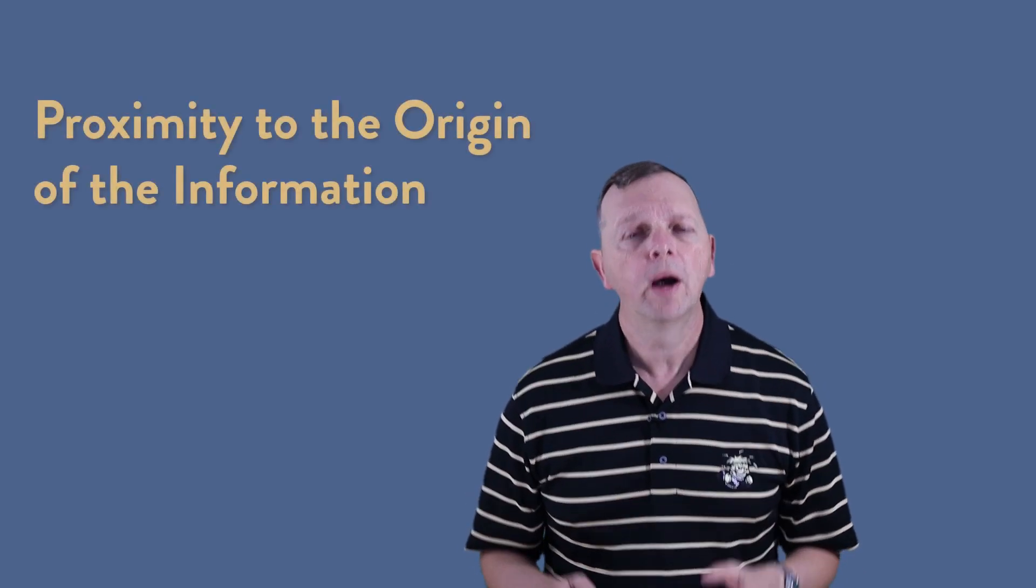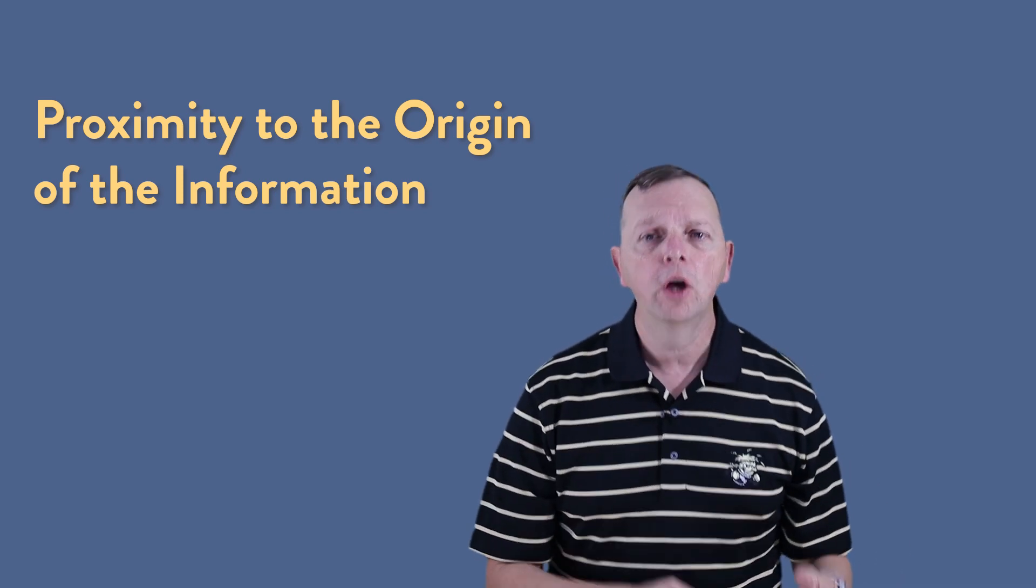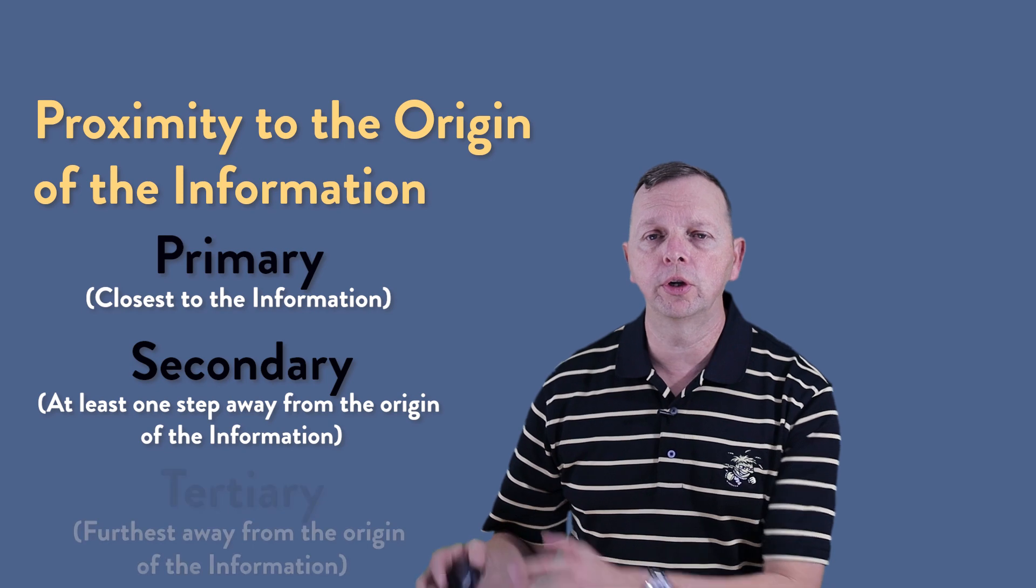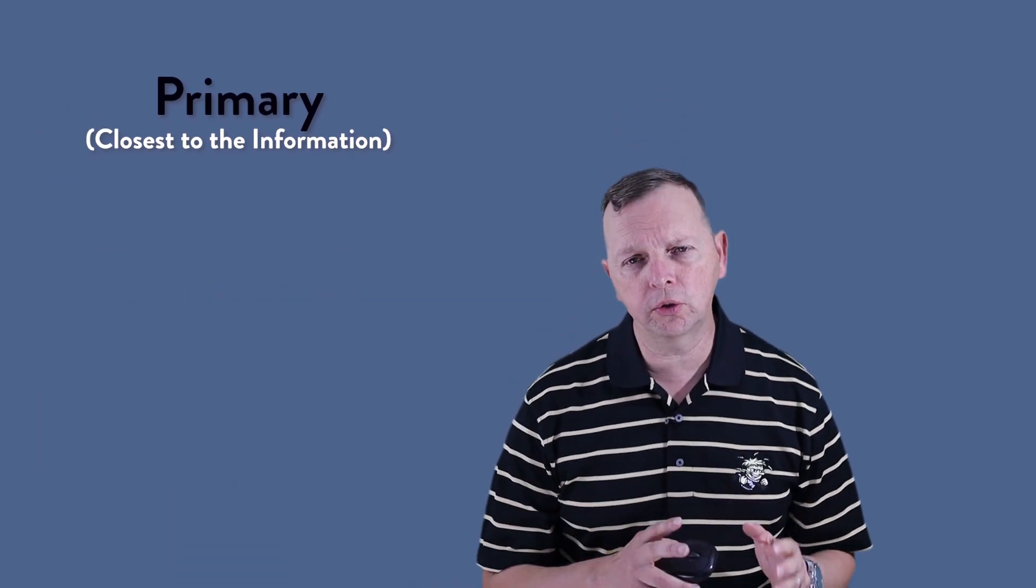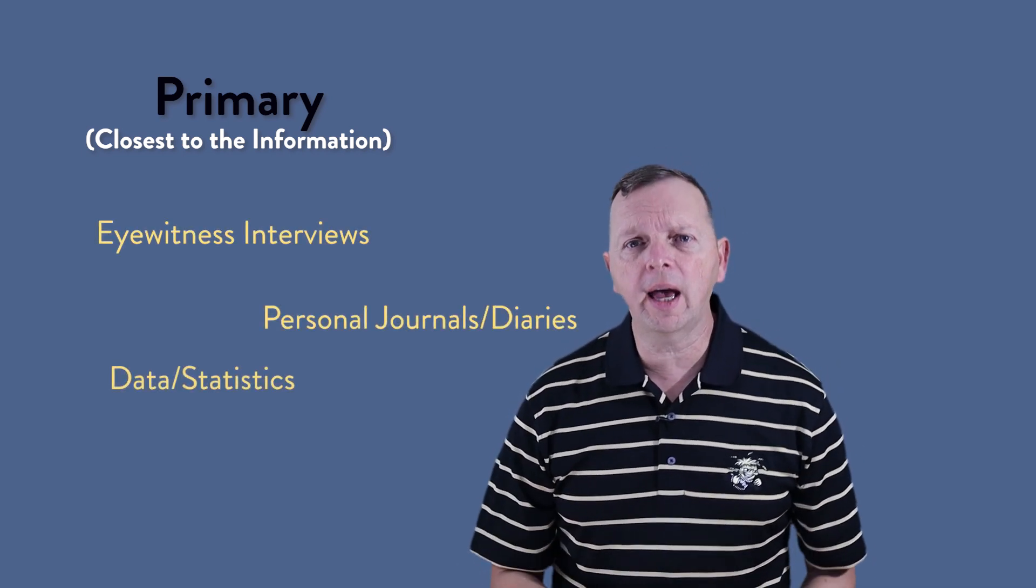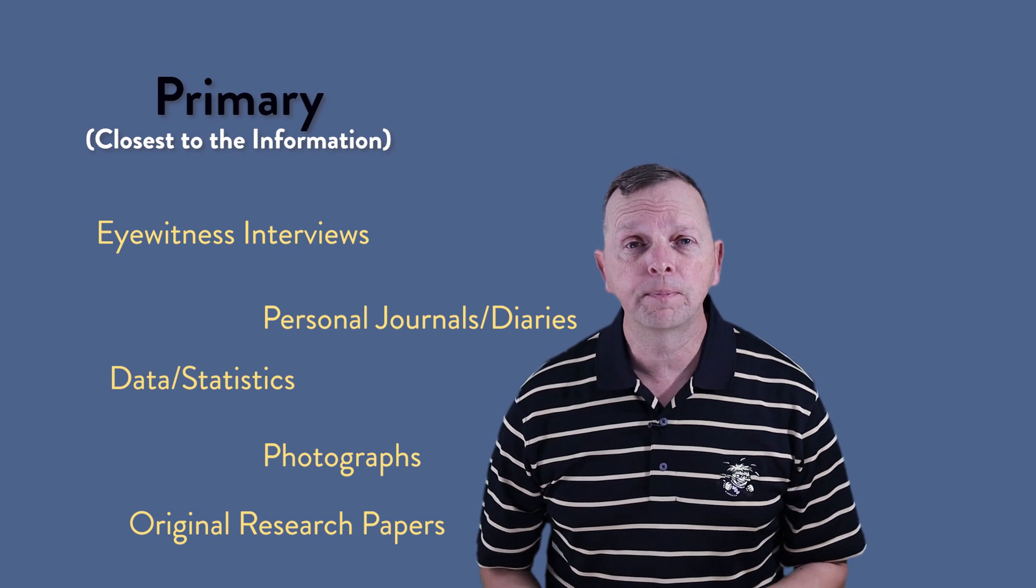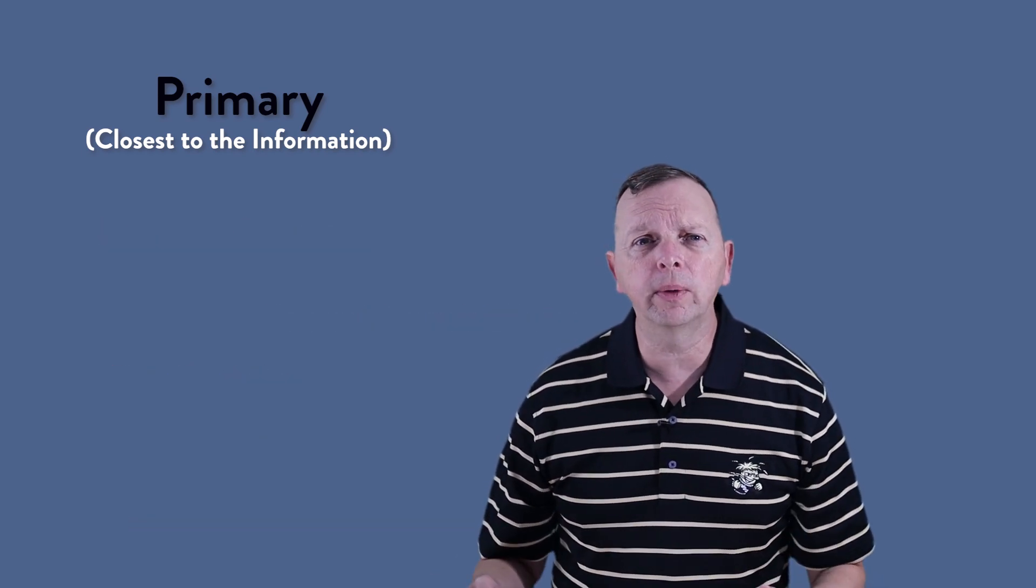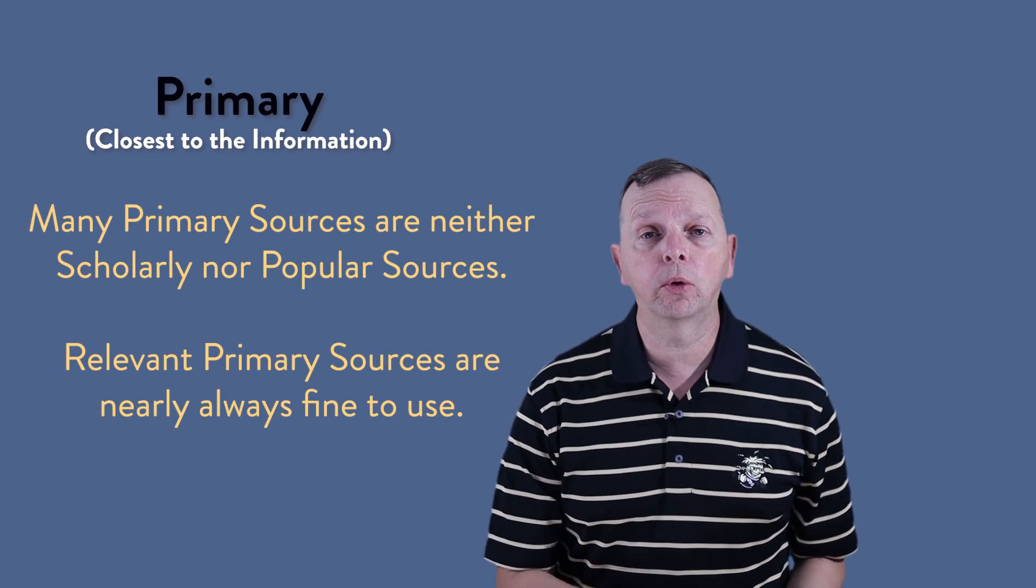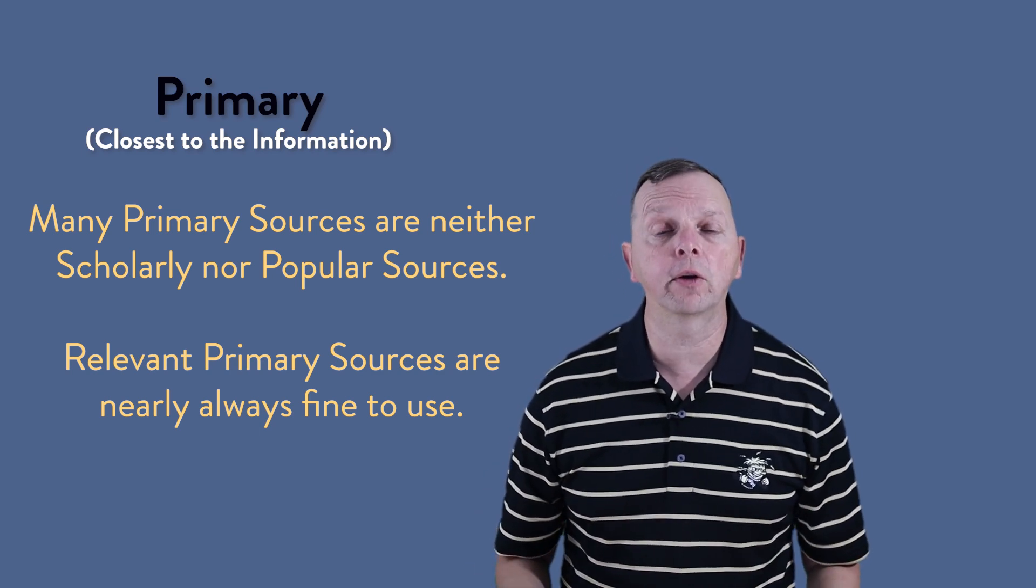All right, so we have scholarly versus popular sources. But sources may also be described by how close the source is to the origin of the information or the event. We break these into three categories known as primary, secondary, and tertiary sources. Primary sources are the closest to the topic at hand. These are the first-hand accounts of the raw information of an event or an idea. These include eyewitness interviews, journals from the time, statistics and data, photographs, as well as scholarly research papers discussing original research conducted and collected data. Interestingly, photos, art, and diaries are primary sources, but they're neither popular or scholarly sources. But that's fine because usually relevant primary resources are always going to be fair game in a research paper.